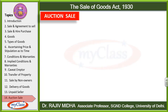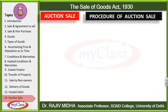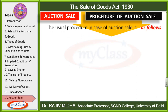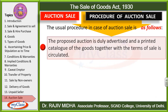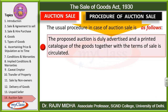Now the procedure of auction sale. The proposed auction is duly advertised, and a printed catalog of goods together with the terms of sale is circulated. जिस auction को किया जाना है उसको पहले advertise किया जाएगा, एक printed catalog of goods बनाया जाएगा जिसमें sale की सारी terms और conditions दी जाएंगी, और इसे public में circulate किया जाएगा।